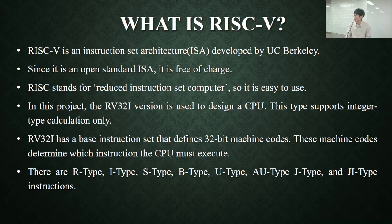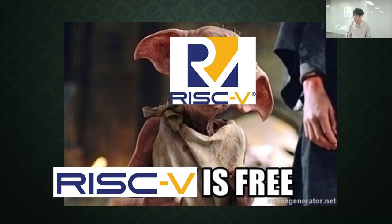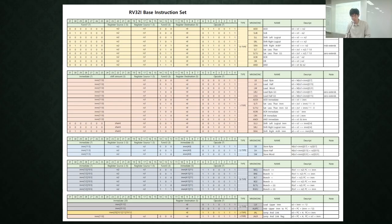To design a CPU, I chose RISC-5 as the instruction set architecture. It is an open standard ISA designed by UC Berkeley. It is easy to use and it is free of charge. This is the base instruction set of RV32I instruction set.